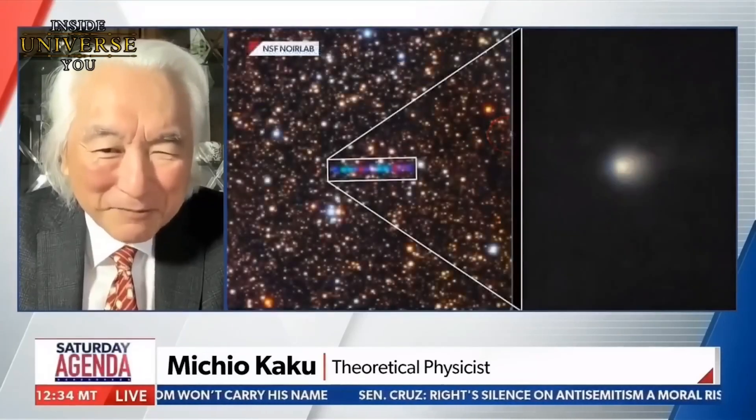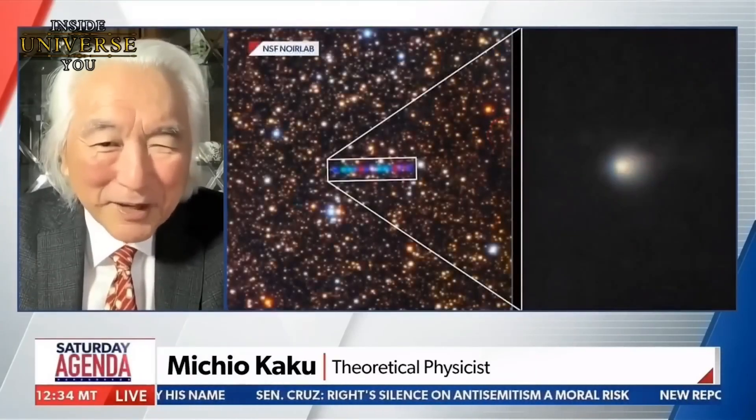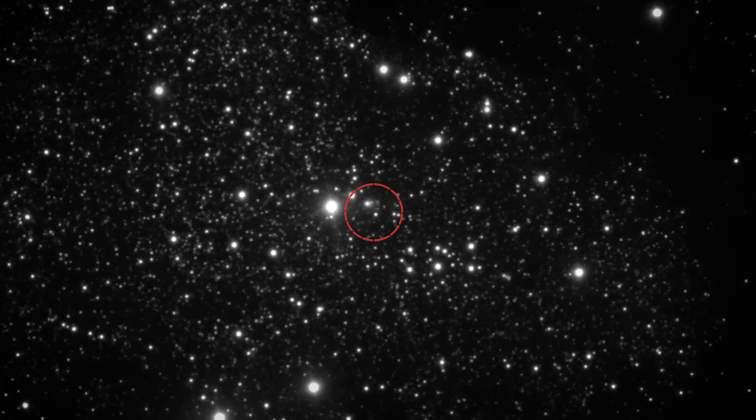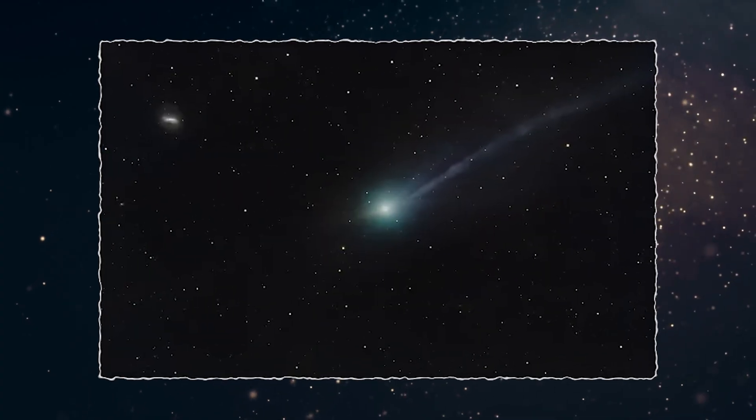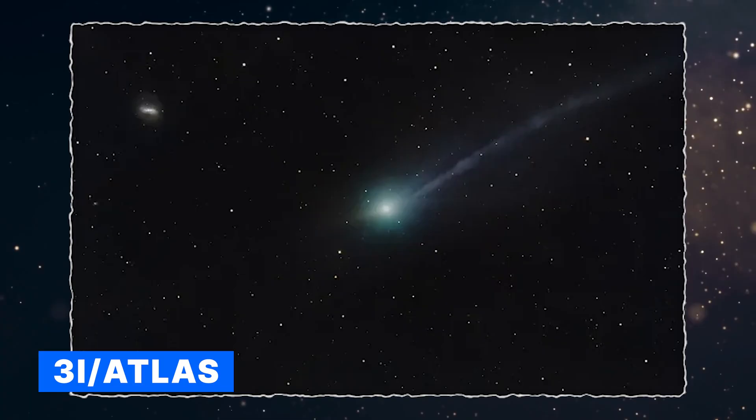Perhaps this is a visitor, an intelligent visitor from another solar system. Three months ago, astronomers thought they'd found just another comet. They catalogued it, named it 3I Atlas, and moved on.